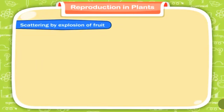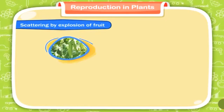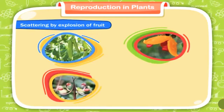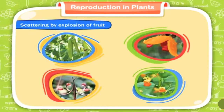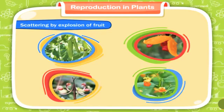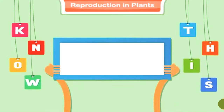Scattering by explosion of fruit. Some fruits like pea, balsam, geranium, and touch-me-not plants explode on drying. Their seeds are thrown out and scattered away from the parent plants.